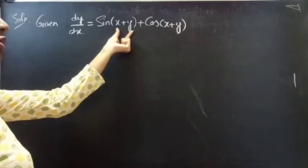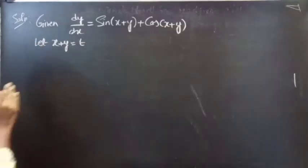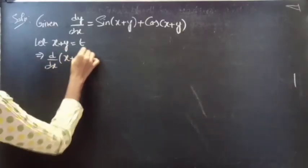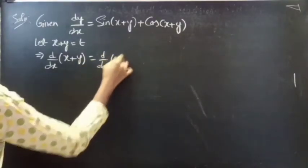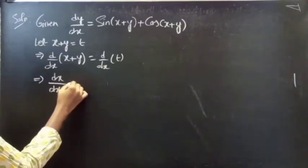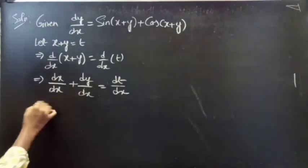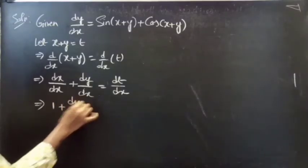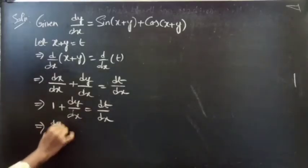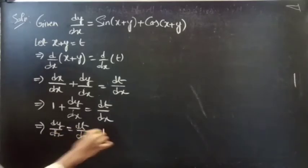We will take x+y equals t. Let x+y equal t. Now differentiating on both sides with respect to x, we get dx/dx plus dy/dx equals dt/dx. Since dx/dx is 1, we get 1 plus dy/dx equals dt/dx. From this, dy/dx equals dt/dx minus 1.